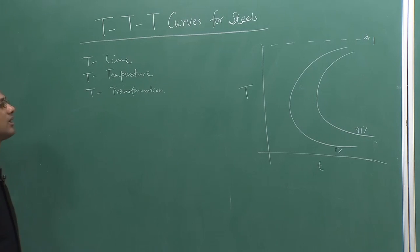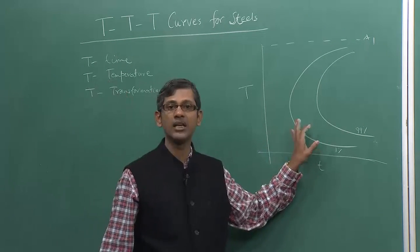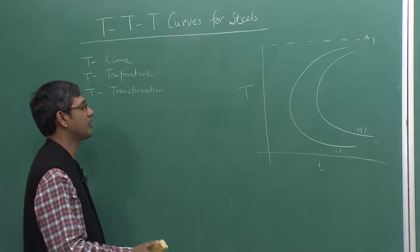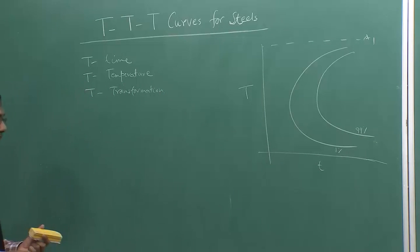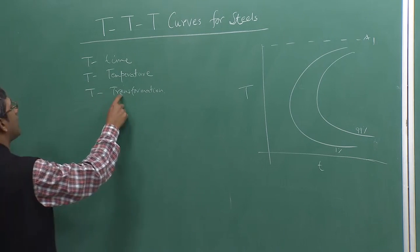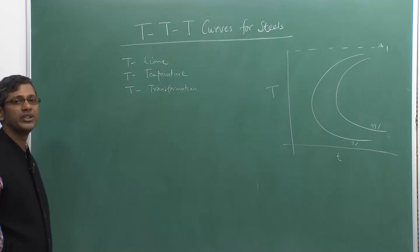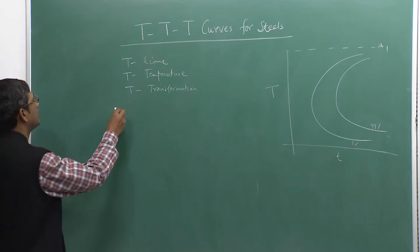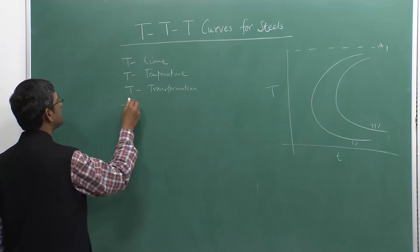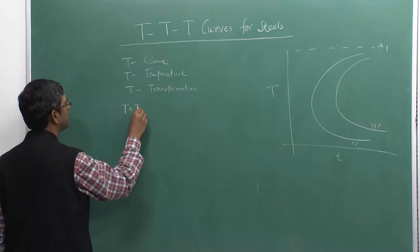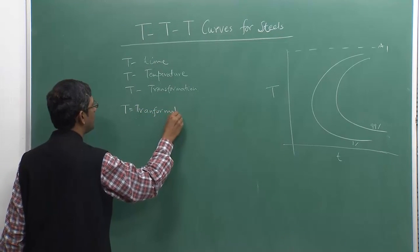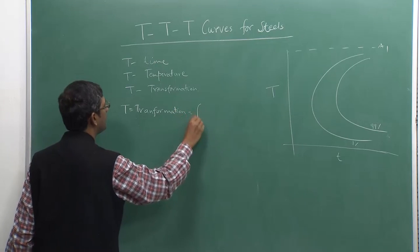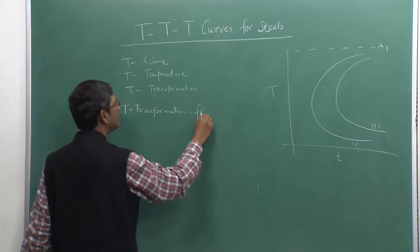First I have to discuss how I get this curve, then I will discuss what we can get out of it. Let us consider the transformation basically depends on nucleation and growth. This transformation — TTT transformation — depends on nucleation and growth; it is a function of nucleation and growth.